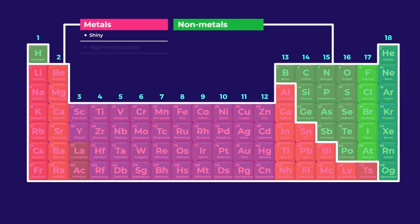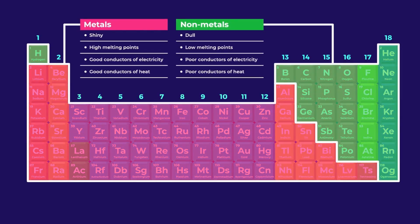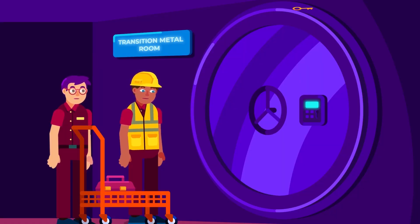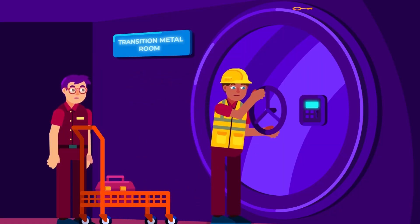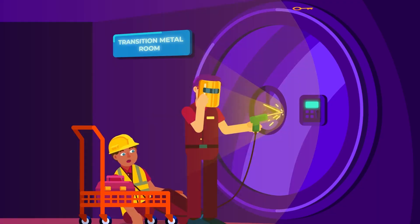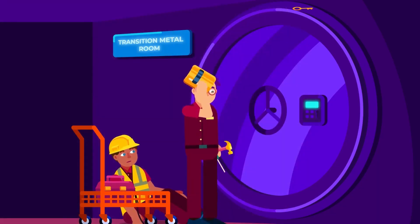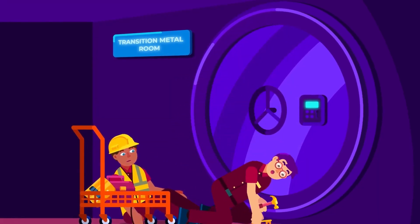The term transition refers to the transitional nature of properties between typical metals and non-metals. The elements in this block, excluding group 11 and 12, exhibit excellent conductivity, have high melting and boiling points, and are hard, strong, and malleable, just like metals.